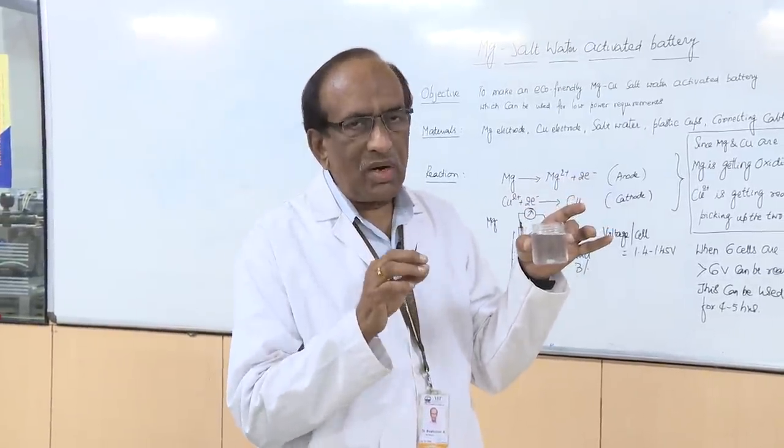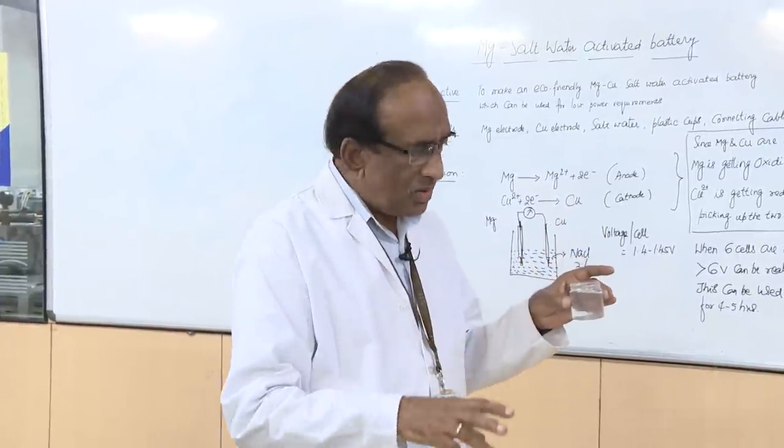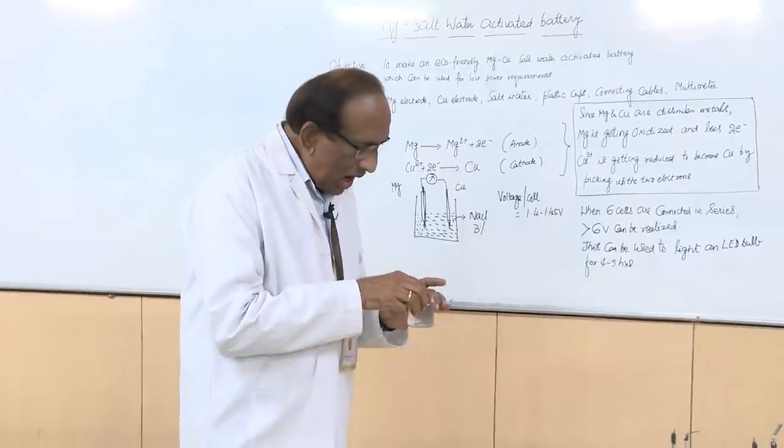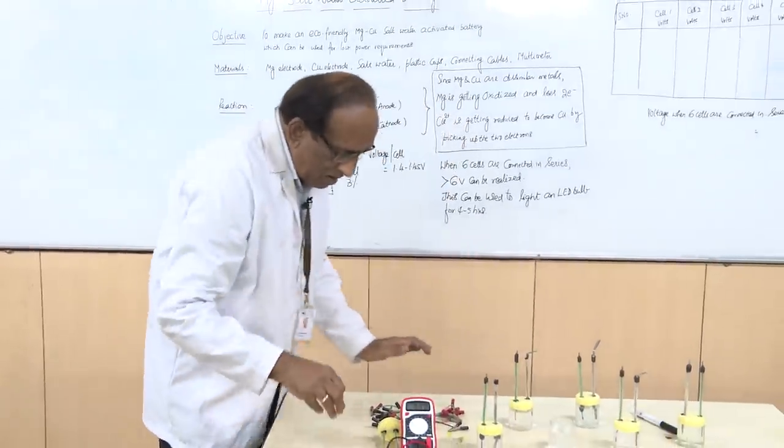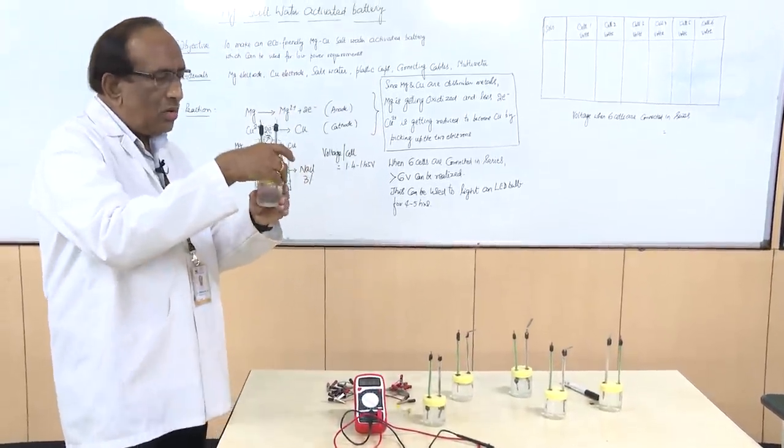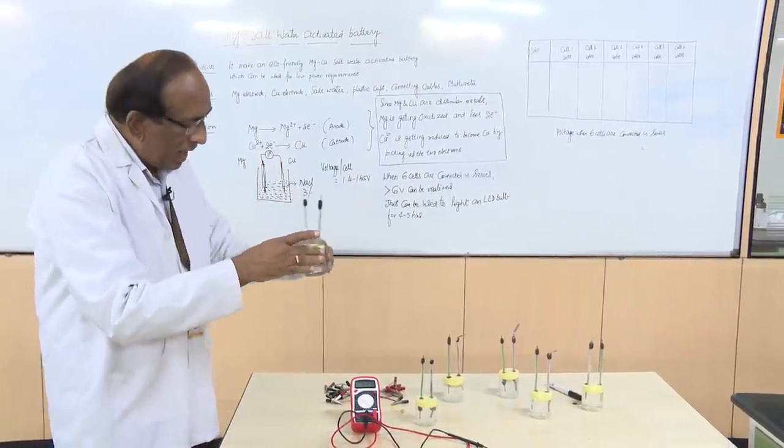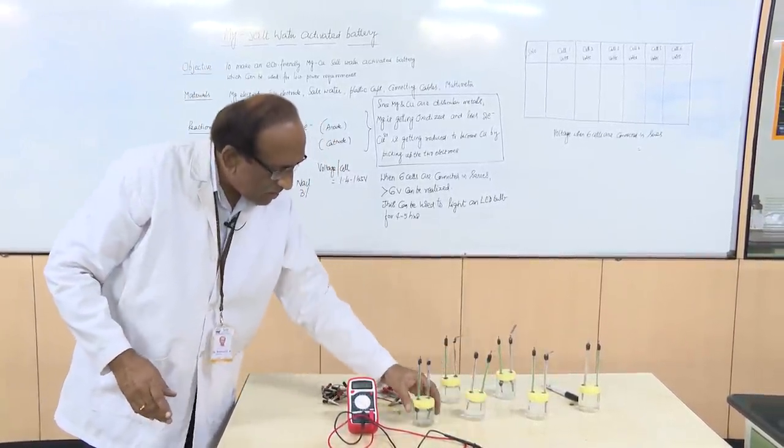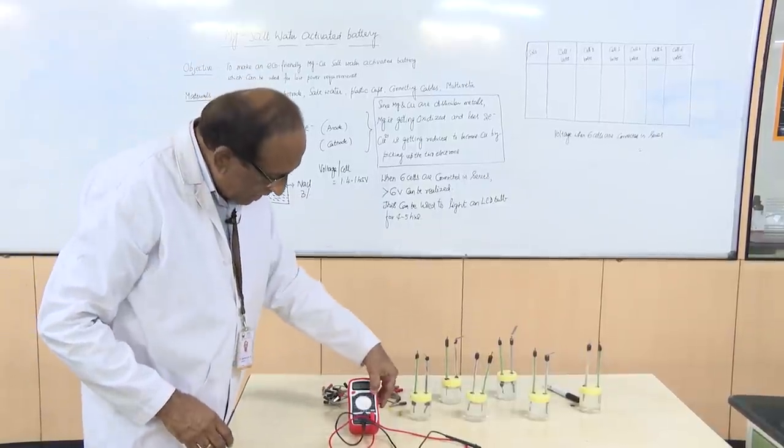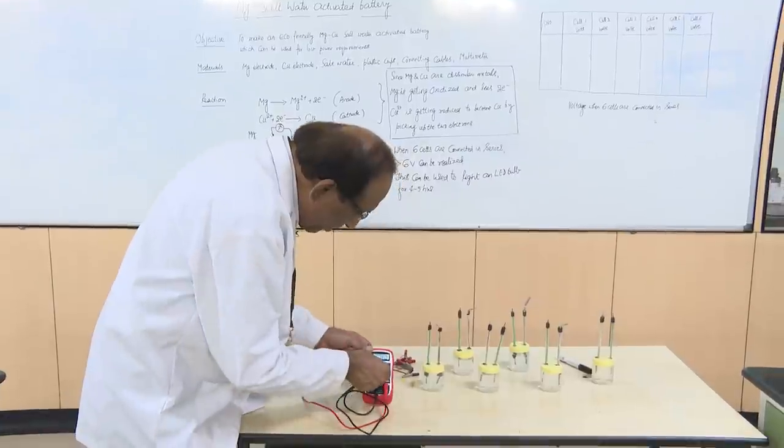Now I will show you how we are going to measure the voltage. We are going to fix the 2 electrodes in a particular plastic container containing 3 percent sodium chloride solution. We have a multimeter which can measure voltage of individual cell.